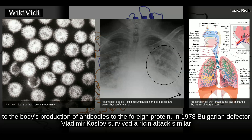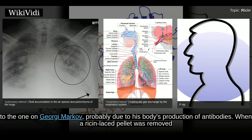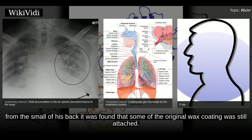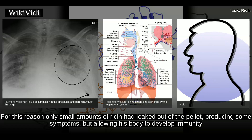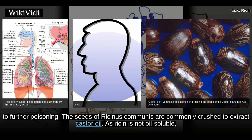Although there is no antidote currently available for ricin poisoning, vaccination is possible by injecting an inactive form of protein chain A; this vaccination is effective for several months due to the body's production of antibodies to the foreign protein. In 1978, Bulgarian defector Vladimir Kostov survived a ricin attack similar to the one on Georgi Markov, probably due to his body's production of antibodies. When a ricin-laced pellet was removed from the small of his back, it was found that some of the original wax coating was still attached, so only small amounts of ricin had leaked out, producing some symptoms but allowing his body to develop immunity to further poisoning.